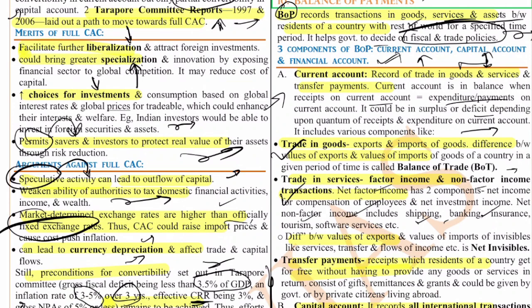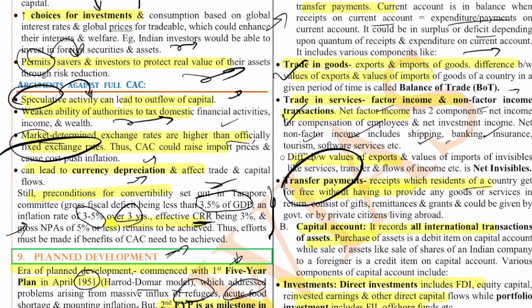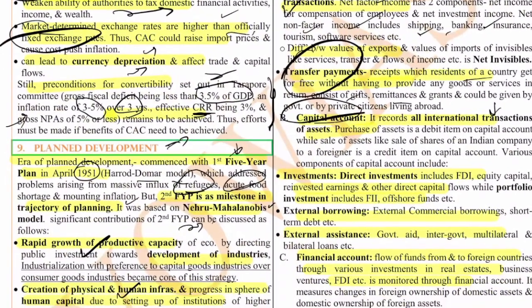Transfer payments are receipts a country receives even when it does not provide services — for example, remittances, gifts, and grants. Next is the capital account in Balance of Payments, which records all international transactions of assets — purchase and sale of assets such as bonds, shares, and international company stakes. It also includes investments: FDIs coming into India, foreign companies investing in Indian companies, and Indian companies investing abroad. It includes FDI, FII, foreign portfolio investments, external borrowings, and external assistance India receives from global banks.